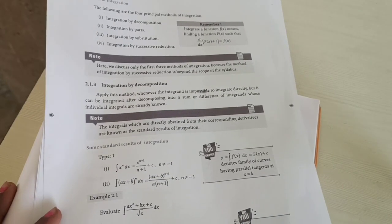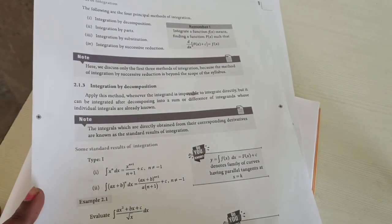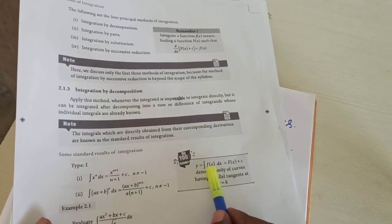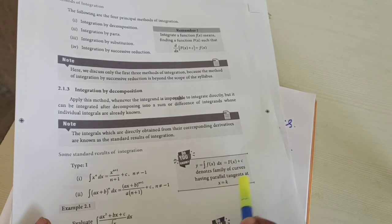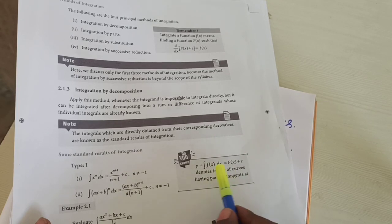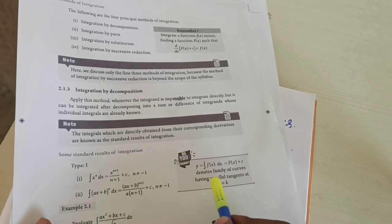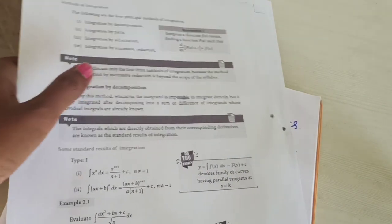These two formulas will be used in all problems. Also note: the integral of dx equals x + c. And the integral of f(x) dx = F(x) + c denotes a family of curves having parallel tangents at x = k. Now let us move to Example 2.1.